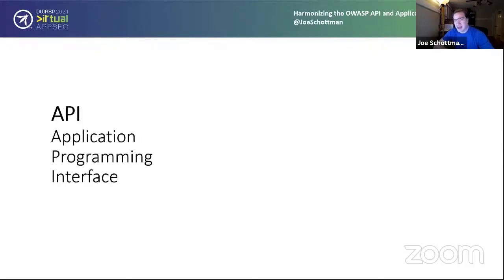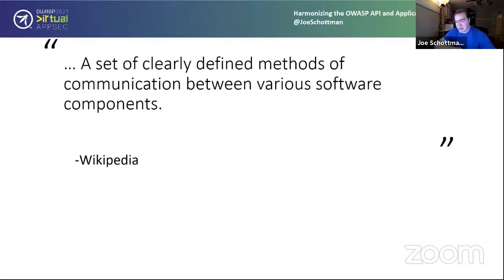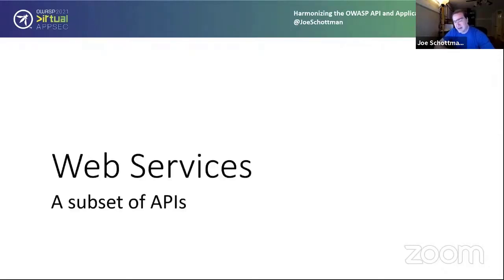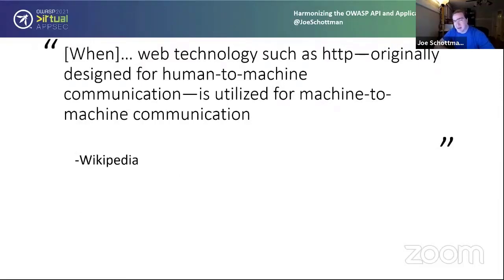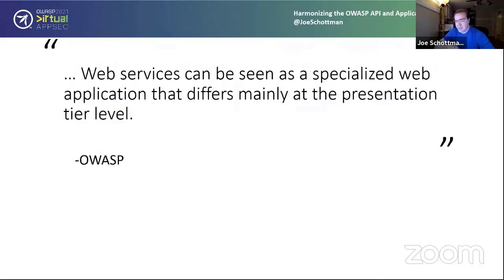API stands for application programming interface — it's about how software communicates between different components. What we're talking about today is mostly web services, a subset of APIs, where computers talk to each other using HTTP as a protocol. OWASP describes the key difference as the presentation layer: a conventional web app includes HTML, CSS, etc., but APIs just return pure data and leave it to the receiving program to present it — whether that means storing to a database, inserting into a web page dynamically via Ajax, or displaying on a mobile app.